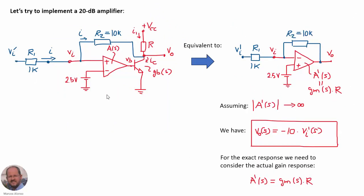Following our discussion in the first part of this video, we are going to try to implement a 20 dB amplifier with the TL431. We are going to use two resistances — we select R2 equal to 10 kOhms and R1 equal to 1 kOhm.